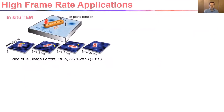One example of a high frame rate application is in-situ TEM, where you want to study the evolution of a specimen over time. This figure is from a paper by the Ms. Seidov group at the National University of Singapore, who used a DE16 to image the rapid rotations of nanoparticles at 300 frames per second.